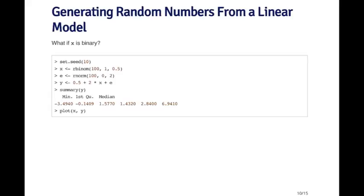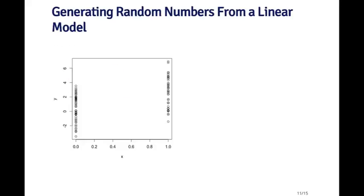So now when I plot the data, of course, they'll look very different because the x variable is binary. But the y variable is still continuous, it's normal. So here you can see that there appears to be a pretty clear linear trend between going from x equal to 0 and x equal to 1.